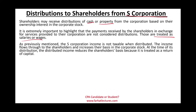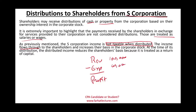Bear in mind that S-Corporation income is not taxable when distributed, because an S-Corporation is a flow-through entity. Whether they distribute the money or not, in the year the S-Corporation generates revenues minus expenses and arrives at a profit — say $100,000 minus $40,000 equals $60,000 — if you're a 50% owner, you are responsible for $30,000 and must pay taxes on that $30,000, whether or not it was distributed.